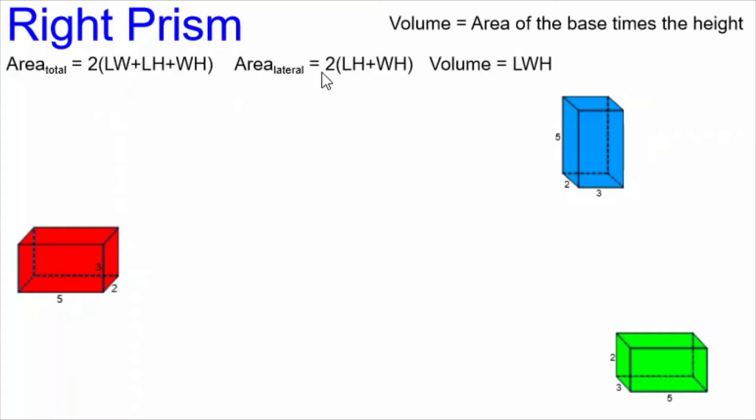The lateral area is two times the total of the length times the height plus the width times the height. It doesn't include the base or the top, but it includes the other four sides. The total area, of course, includes all six faces.